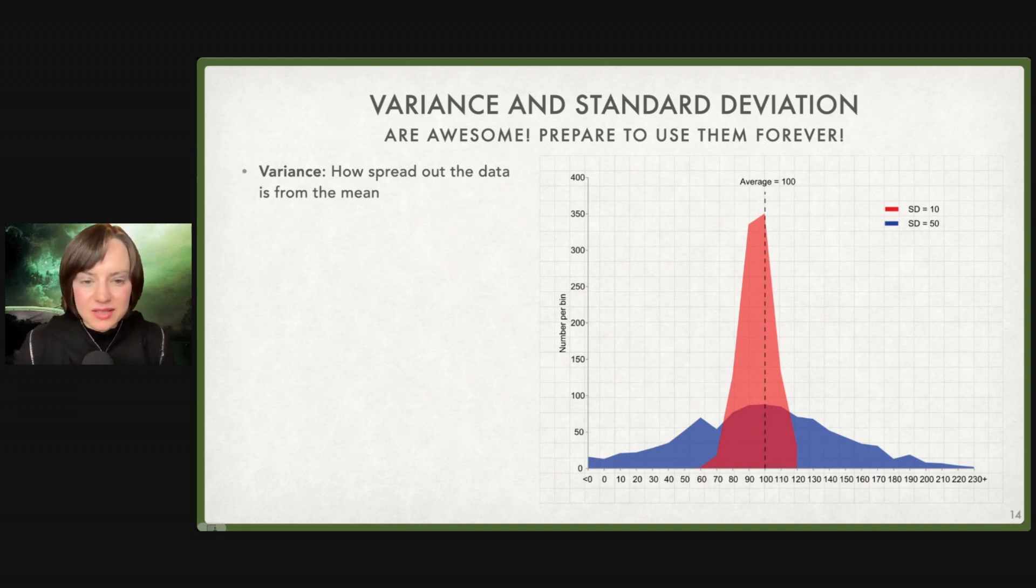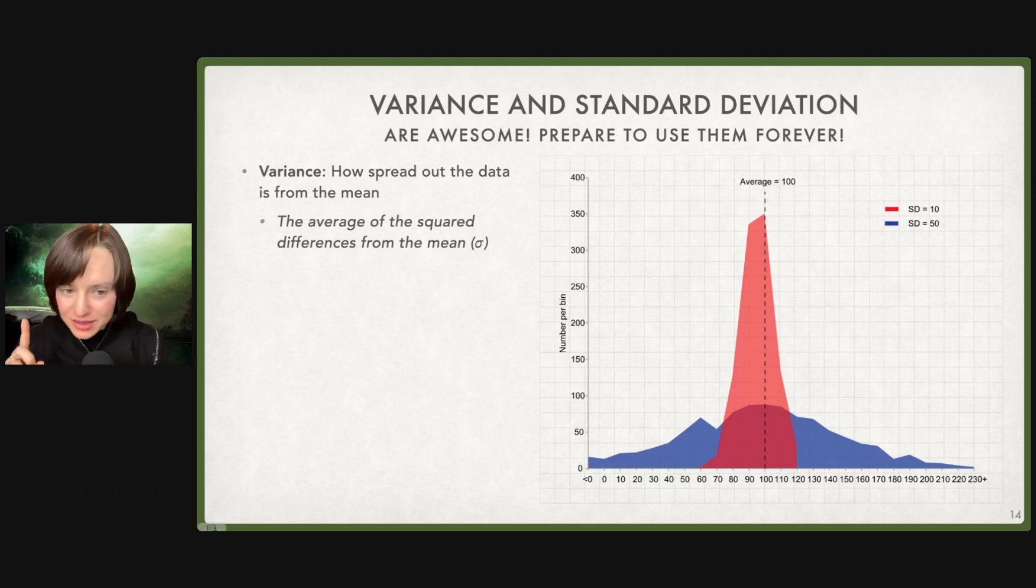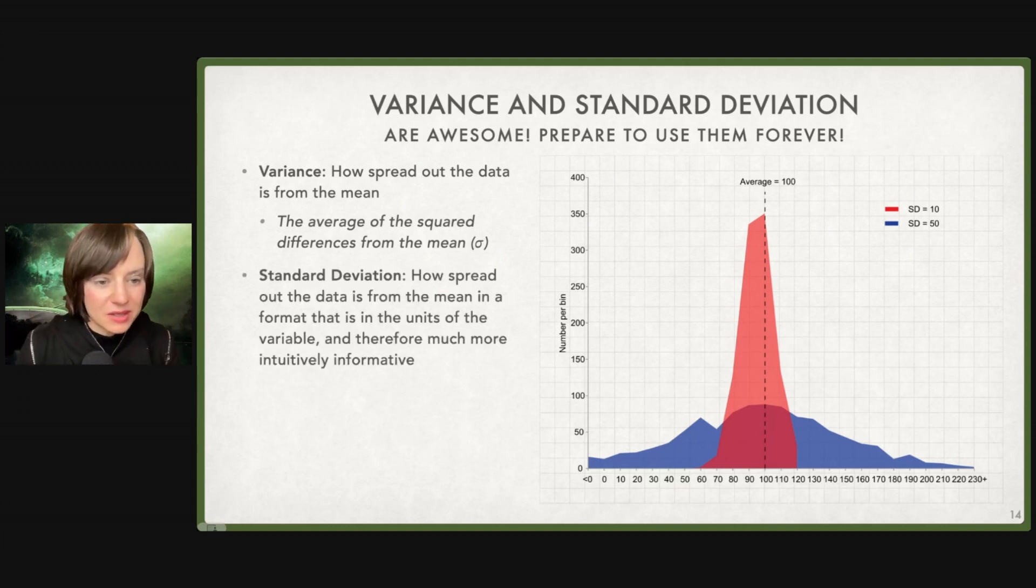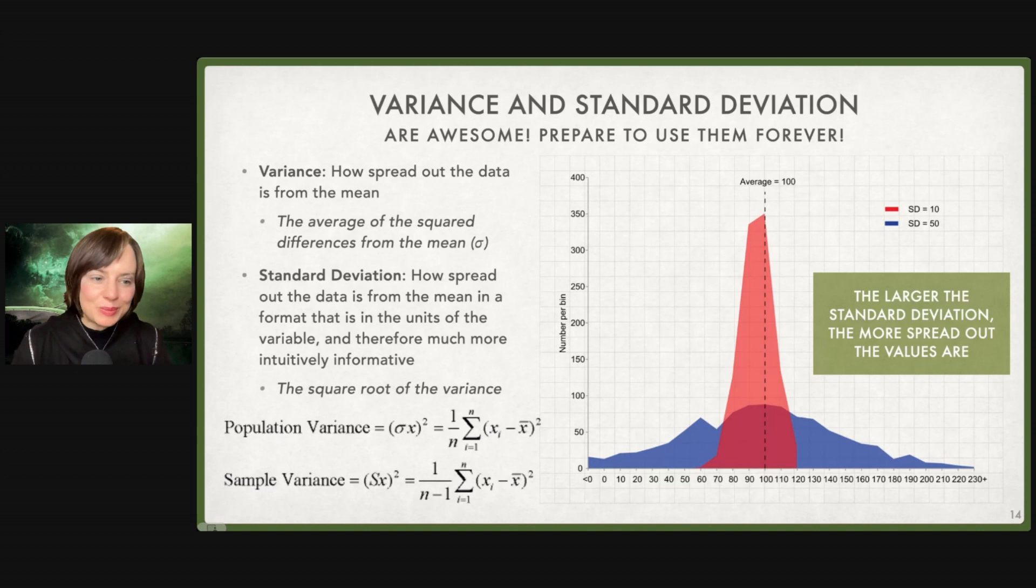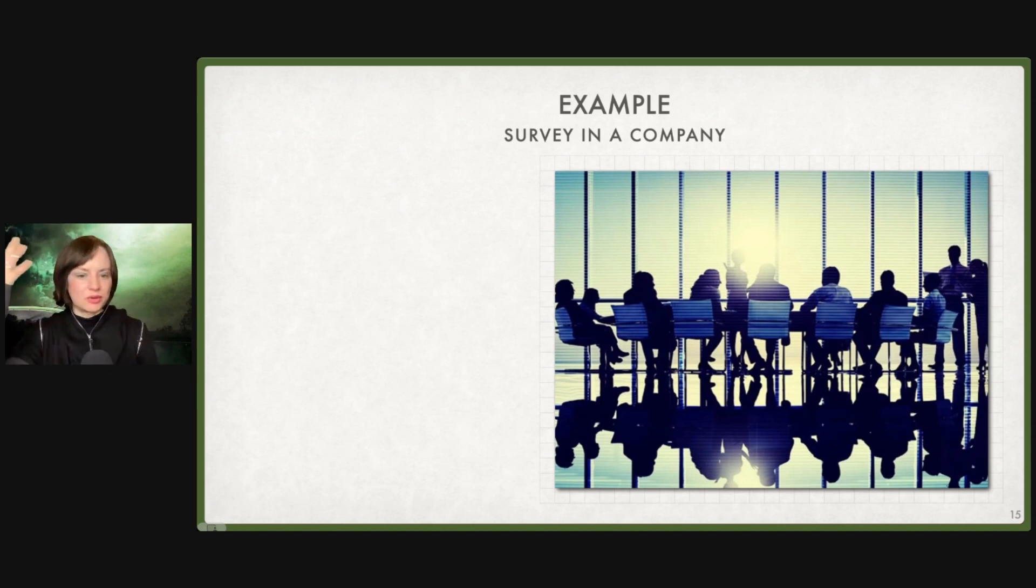Some examples of variance and standard deviation. Prepare to use them forever if you know what's good for you. The variance, as I said, is how spread out the data is from the mean. It's the average of the squared differences from the mean. We square it so that we don't cancel out the negative values. The standard deviation is how spread out the data is from the mean in a format that we can actually interpret by finding the square root of the variance. The larger the standard deviation, the more spread out the values are.